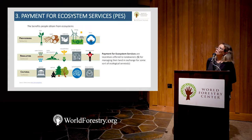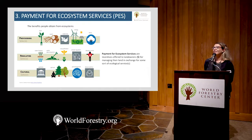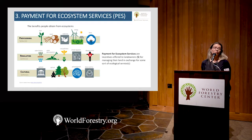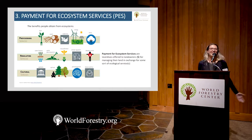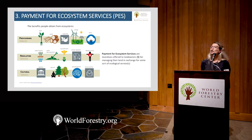Just to be on the same page: ecosystem service is the benefit that people obtain from the ecosystem. They are generally classified in three categories — provision, regulating, and cultural service — such as climate regulation, wood, or food. Payment for ecosystem service is the incentive, usually money, that we offer to landowners for management of their land in exchange for some type of ecological service.